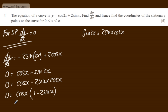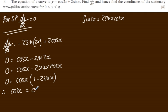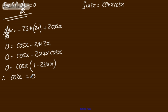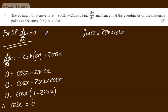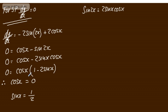We can see that cosx = 0 or 1 - 2sinx = 0, which gives sinx = 1/2. From cosx = 0, we can say that x = π/2.